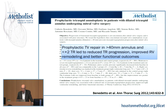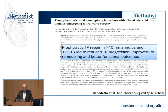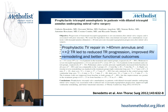A paper from 2012 in the Annals of Thoracic Surgery suggested that prophylactic tricuspid valve repair in patients with an annulus greater than 40 millimeters and less than 2+ TR — using annular dilatation as the primary marker — improved RV remodeling and produced better functional outcomes.